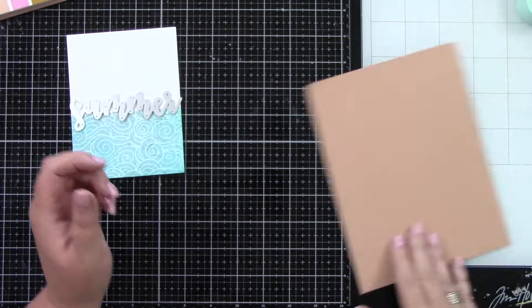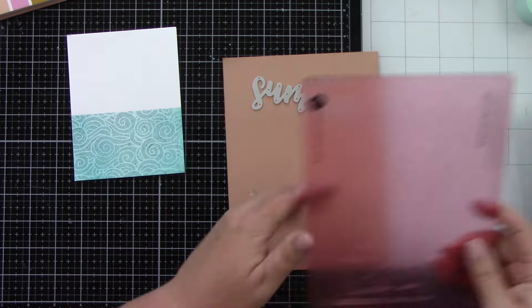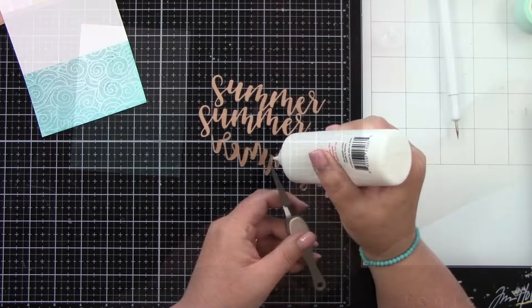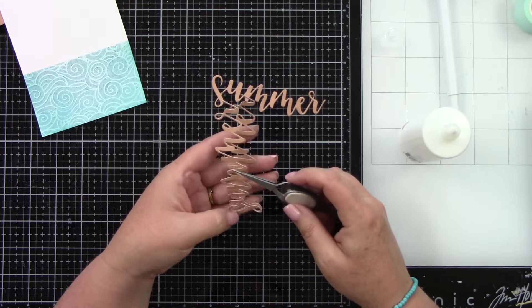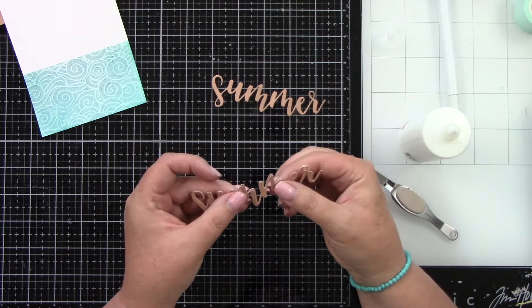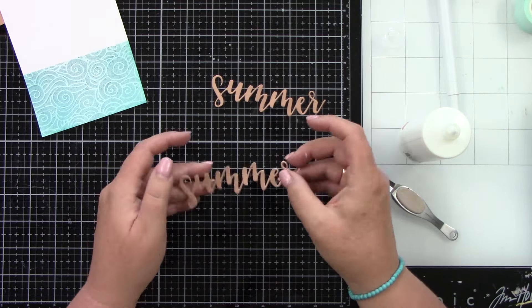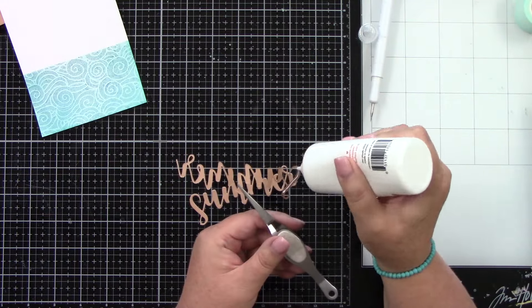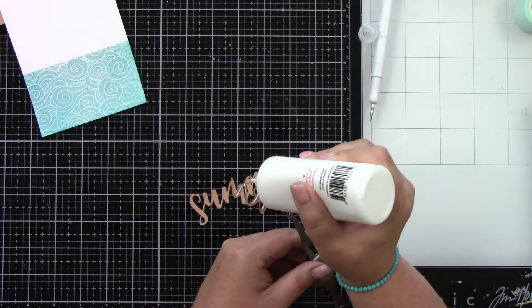I am using the Neutrals paper pad from Scrapbook.com along with the Summer Words die. I'm going to die cut it three times from that sand color cardstock, a darker sand in that Neutrals pack. And then I'm going to use a lighter sand for some of my other images. I die cut that three times and I'm going to glue it together. This is going to give us some dimension for our big sentiment here.